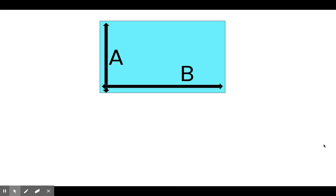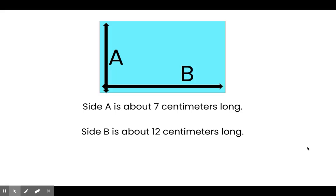Let's look at another strategy for finding the difference between two lengths. Remember, we have this important information. We know that side A is about 7 centimeters long. We also know that side B is about 12 centimeters long. The strategy we're going to use this time is finding the difference. What does it mean to find the difference? Do you remember? Remember, when we find the difference, we subtract one number from another. That's the difference. We're subtracting.